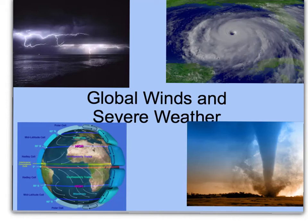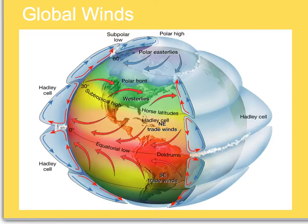Now for the juicy stuff: global winds and severe weather. You can see how this is a diagram of the Earth divided into sections, and each of these sections represents a global wind belt, which we are going to go over.